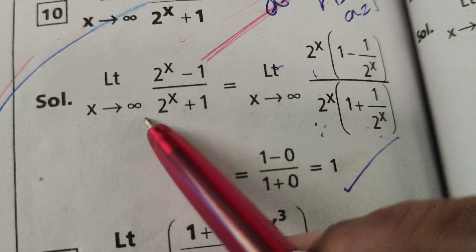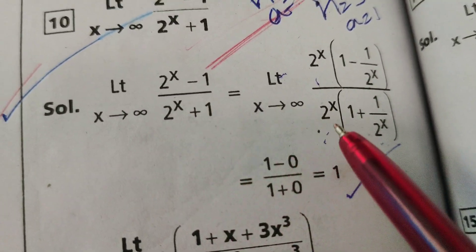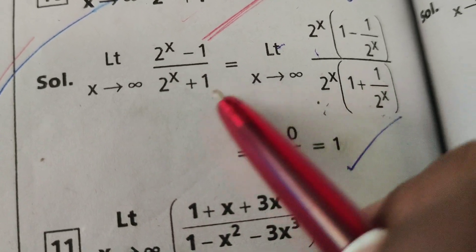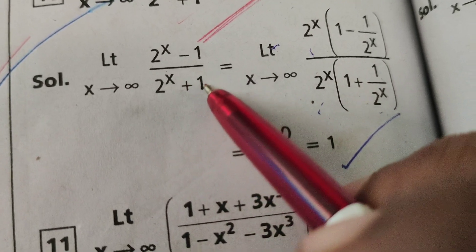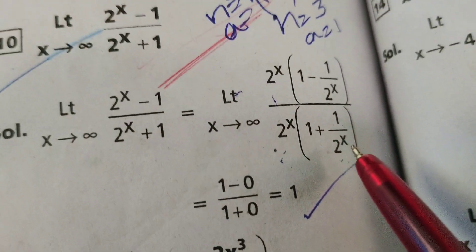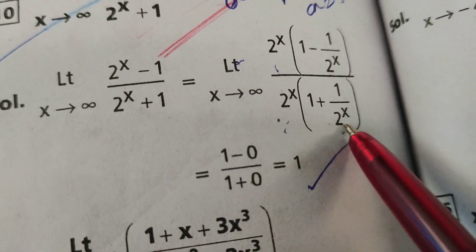Denominator also, 2 power x is a common factor. 2 power x into 1 plus, here there is no 2 power x. So, write denominator 2 power x.